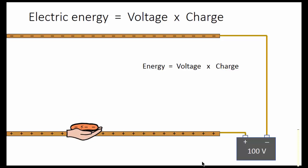How much is that work? Now, ignoring gravity and just considering the electric field, the energy is the voltage times the charge. If this is 100 volts difference, and this is 1 coulomb of charge, then the energy is 100 volts times 1 coulomb equals 100 joules.